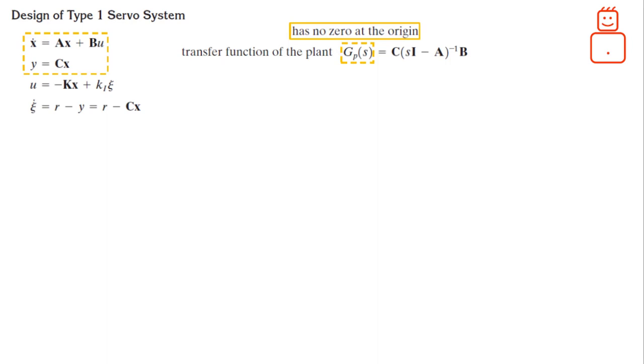Now, let us assume that the reference input, which is here a step function, is applied at T equal to 0. Then, for T greater than 0, the system dynamics can be described by an equation that is a combination of both the process state space realization and the error dynamic. This is given as shown.